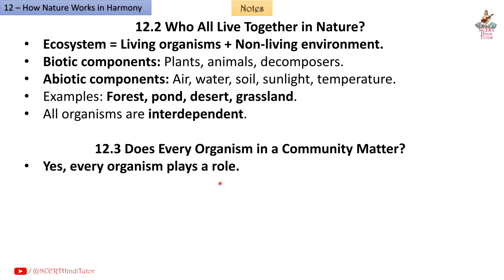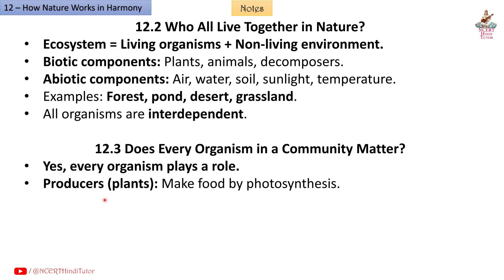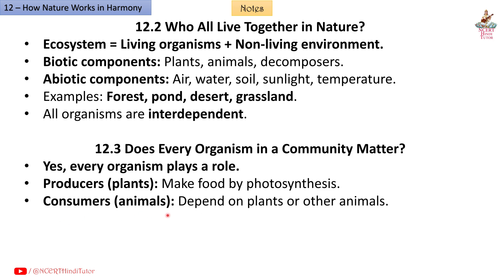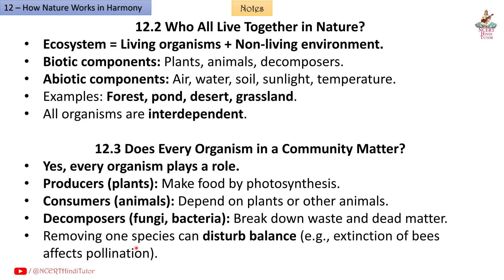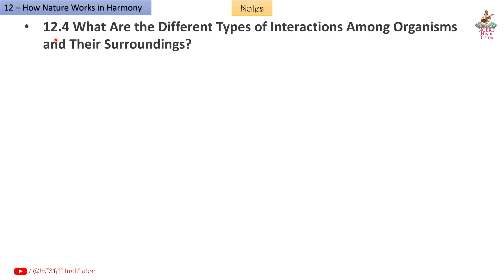12.3: Does every organism in a community matter? Yes — every organism plays a role. Producers: plants make food by photosynthesis. Consumers: animals depend on plants or other animals. Decomposers: fungi and bacteria break down waste and dead matter. Removing one species can disturb balance. Example: extinction of bees affects pollination.